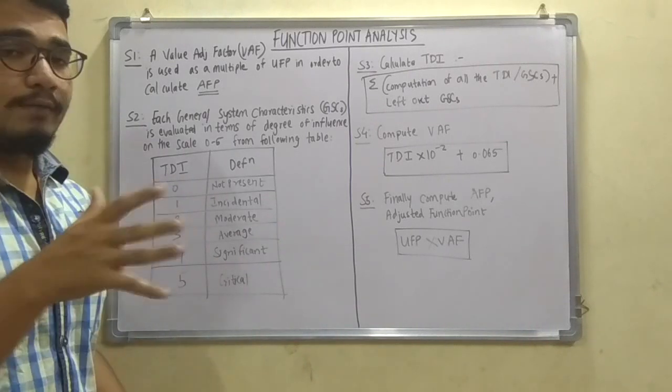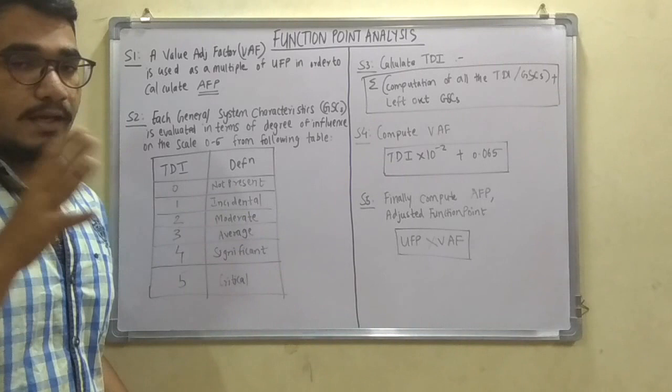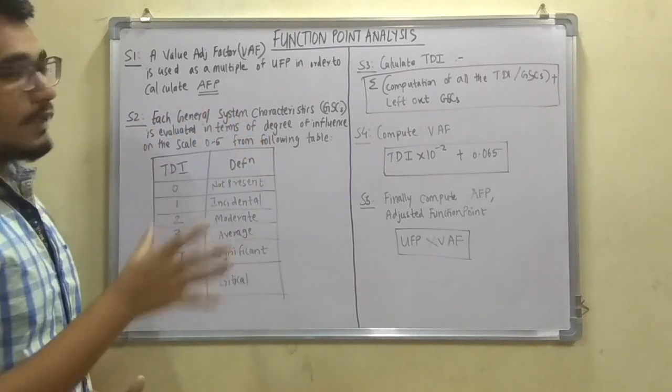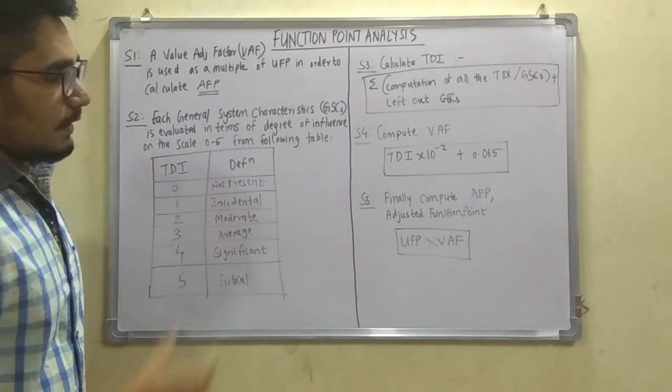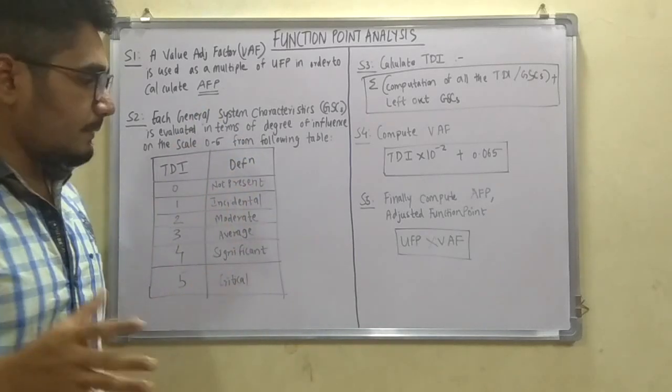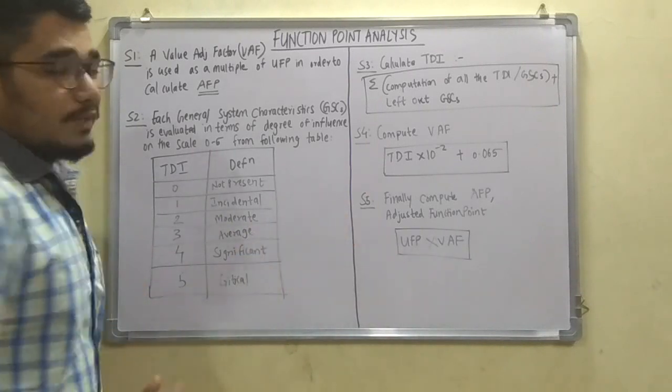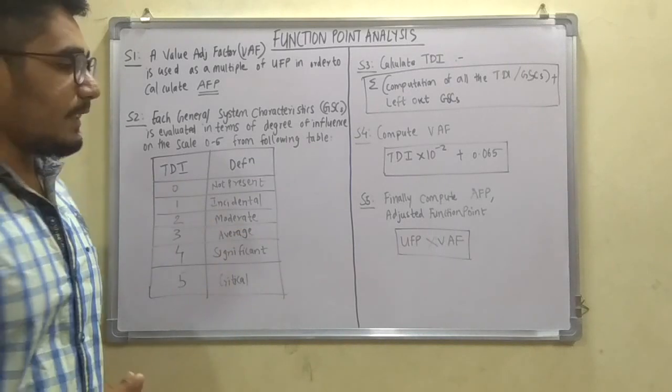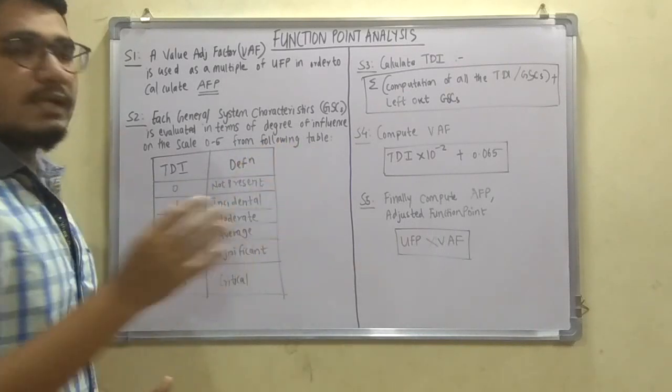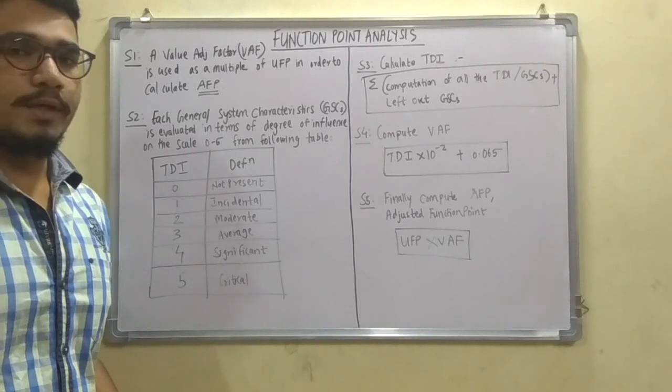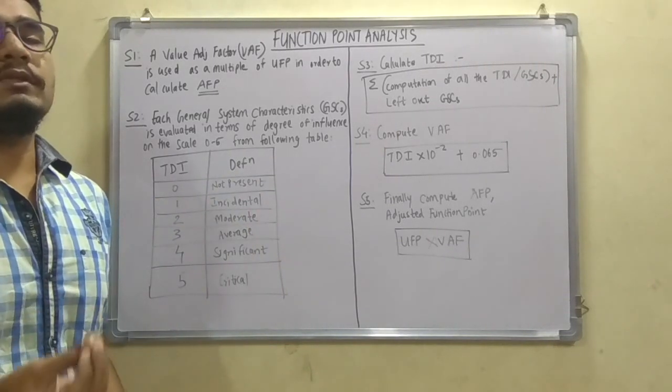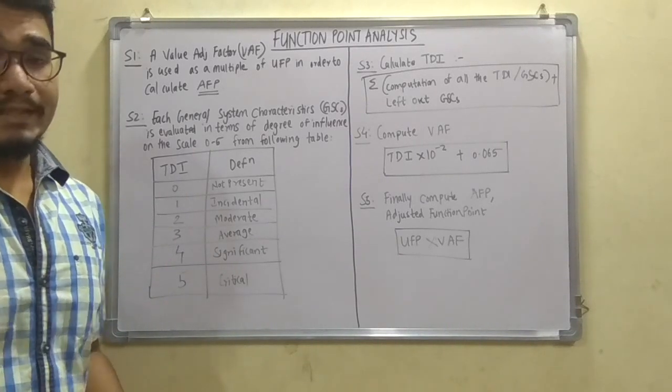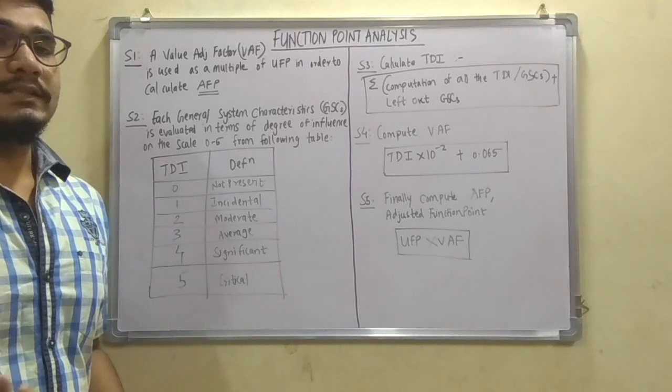And step 5 is finally you have to compute the AFP, that is the adjusted function point, which you need to actually calculate from this. That is the main motto of this problem by using UFP multiplied by VAF. That is the unified function points that you get from computation of all the TDIs multiplied by the VAF. So this will give some integer value or a floating point value which will give how many efforts or the days or the resources which are required in order to complete the testing based upon the software testing life cycle.